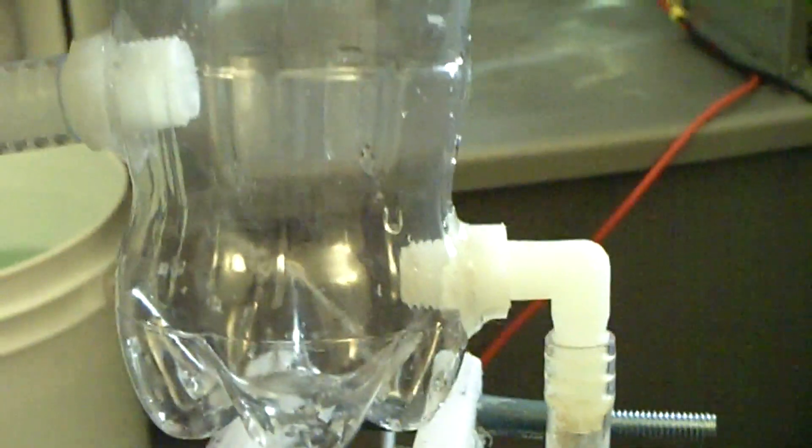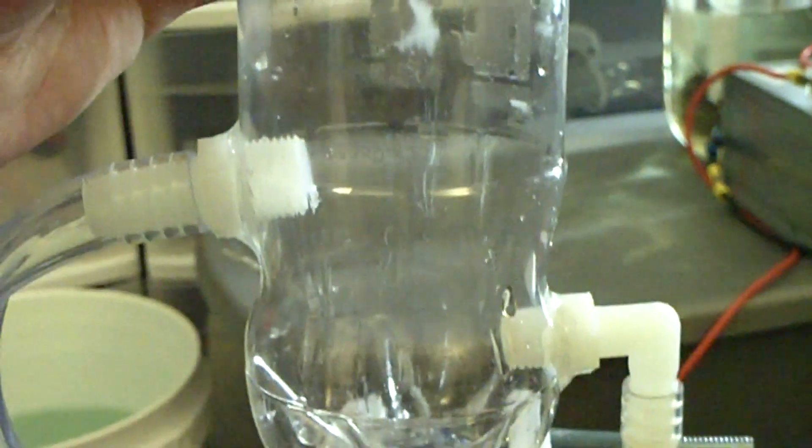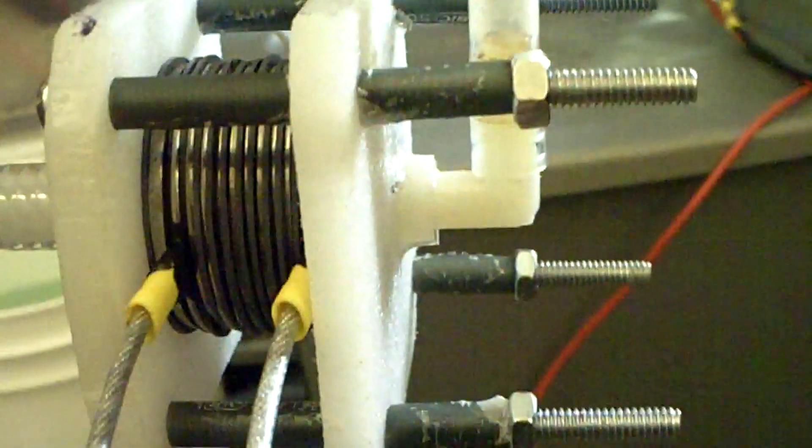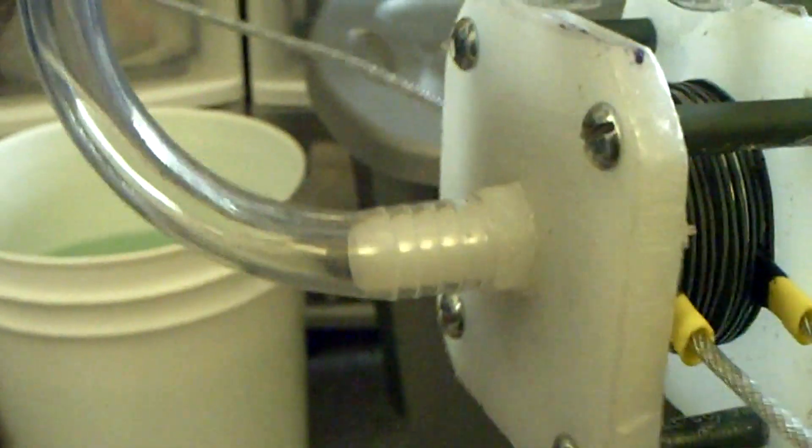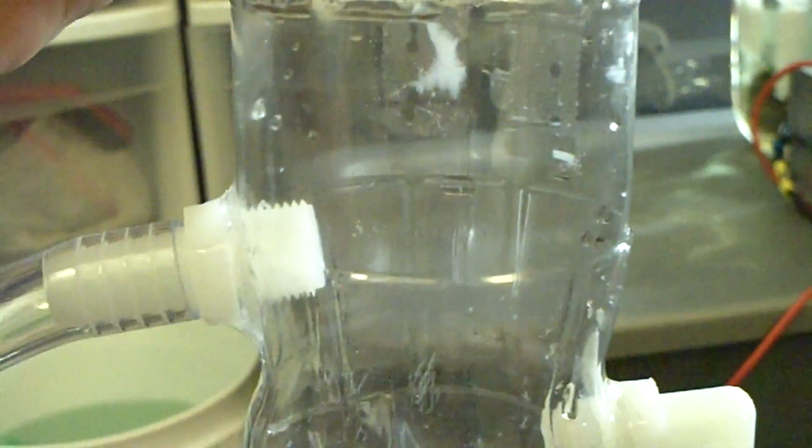Also over here I used a mini coke bottle as the bubbler and reservoir, and this barb right here runs down into the back of the cell which is going to act as a water refill. And then over here you've got a half inch hose barb that runs up about midway on the bottle.